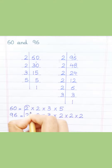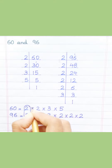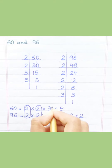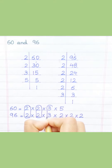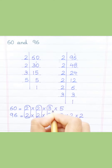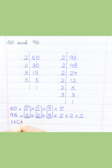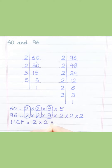Loop the common prime factors among both. HCF equals 2 multiply 2 multiply 3.